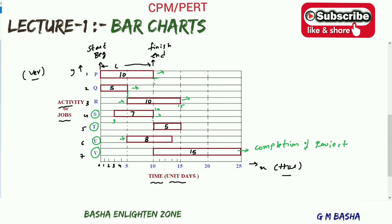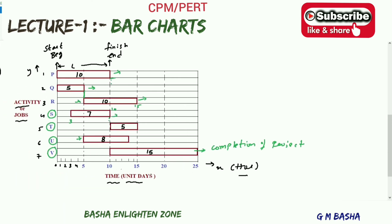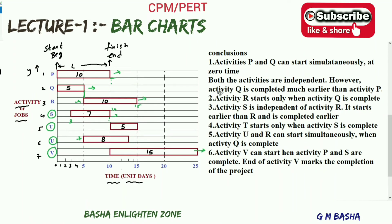To summarize all the conclusions: activity P and Q start simultaneously at time 0 and are independent, but Q completes much earlier than P. Activity R starts only when Q is completed. Activity S is independent of R but starts and completes earlier. Activity T starts only when S is completed. Activities R and U start simultaneously after Q is complete, and activity V marks the completion of the project.